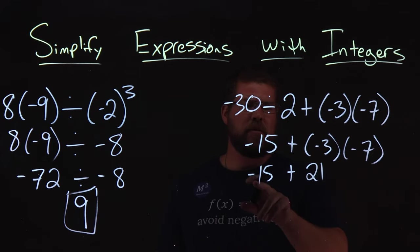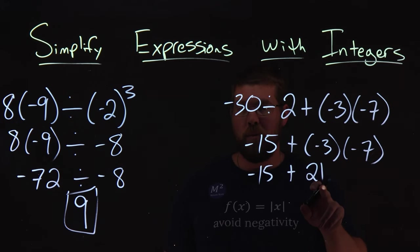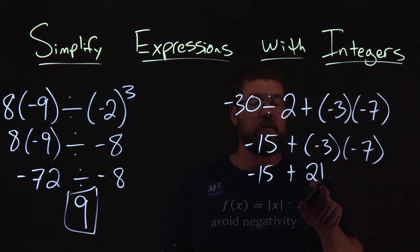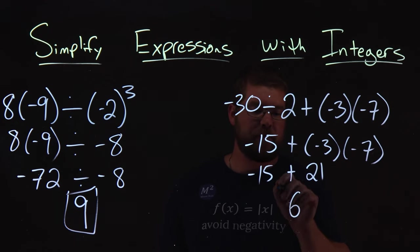So now we have addition happening, negative 15 plus a positive 21. Well, negative 15 plus a 21 comes out to be a positive six. And there we have it.